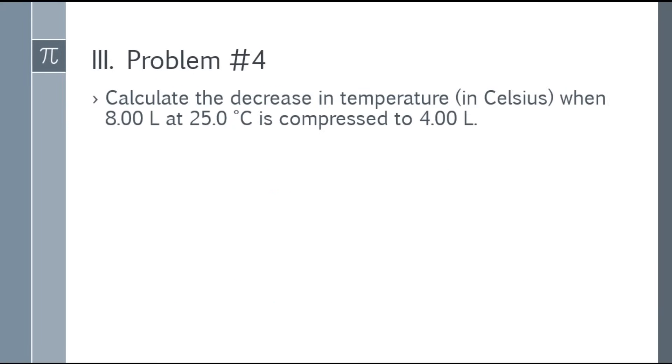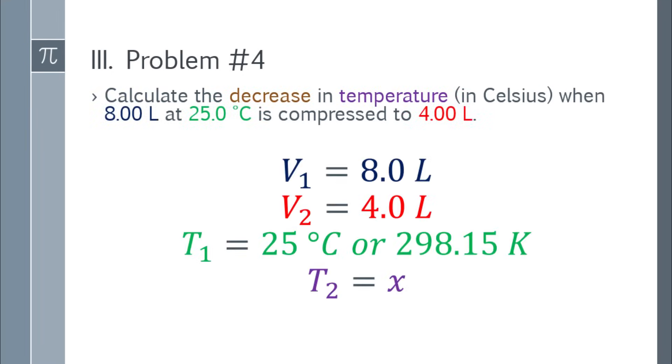Okay, let's go to number 4. Calculate the decrease in temperature in Celsius when 8.00 L at 25.0°C is compressed to 4.00 L. So list the given. The values are color-coded. We're looking for the resulting temperature first. But ultimately, the final answer should be the decrease in temperature.